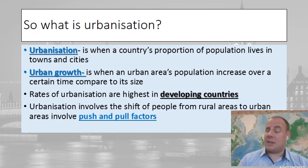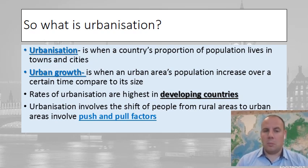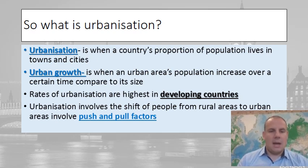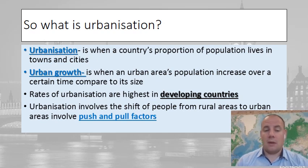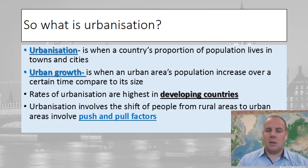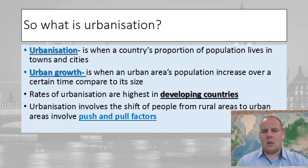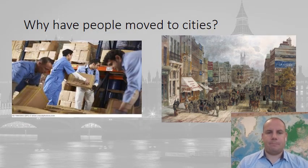Rates of urbanization at the moment are highest in developing countries, but that hasn't always been the case, and it has led to more and more problems. Urbanization involves the shift of people from rural areas to urban areas, described using push and pull factors. Rural refers to the countryside, while urban areas are big cities.